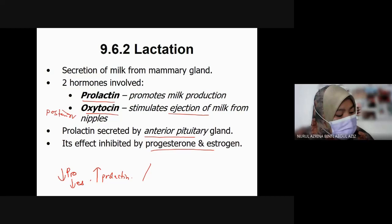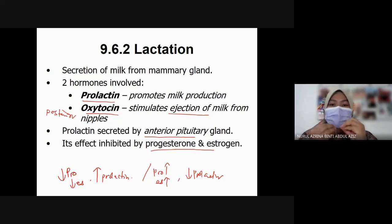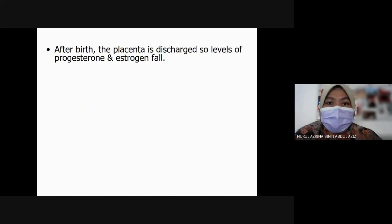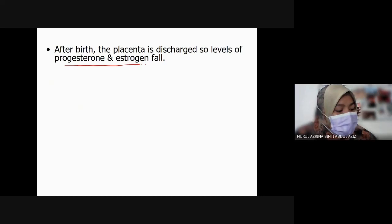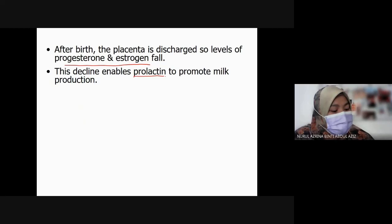If progesterone is still high and estrogen is still high, prolactin will be lower — these two hormones inhibit one another. After birth, at the end of pregnancy, estrogen is very high so prolactin is low. But once the baby is delivered, the level of progesterone and estrogen will drop. The placenta is discharged and the level of progesterone and estrogen will fall. The decline of progesterone and estrogen will enable prolactin to promote milk production.